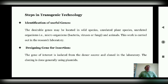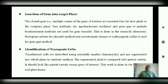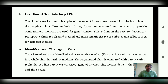The gene of interest is isolated from the donor source and cloned in the laboratory. The next step in developing a transgenic plant is to insert the gene into a target plant. The cloned genes, or multiple copies of the gene of interest, are inserted into a host plant or the recipient plant. There are two methods generally used for insertion.